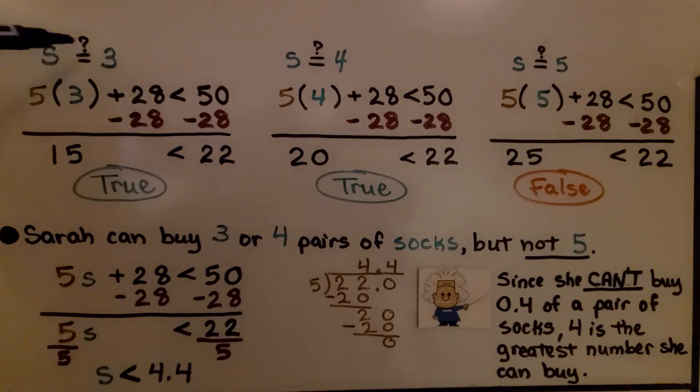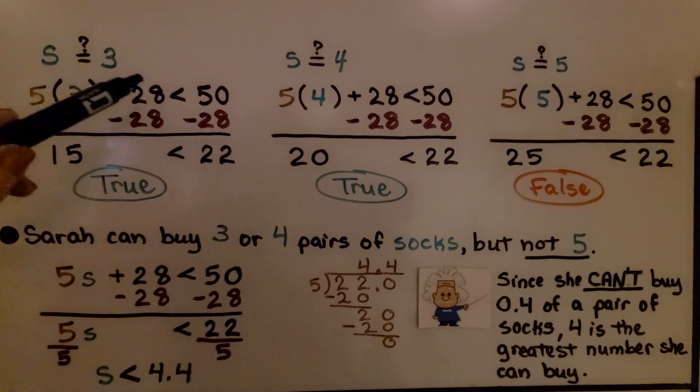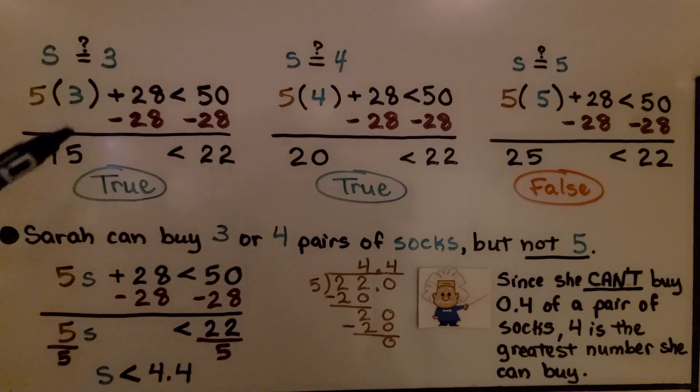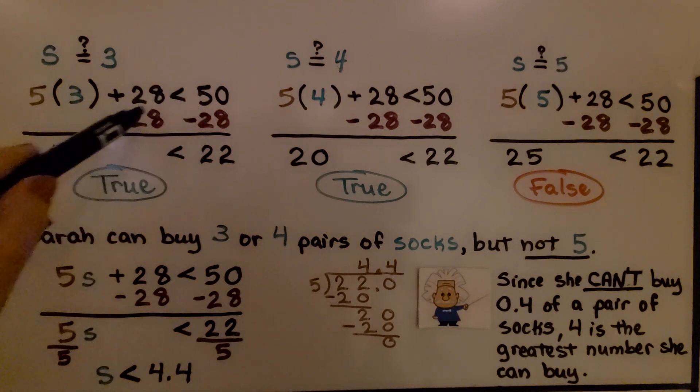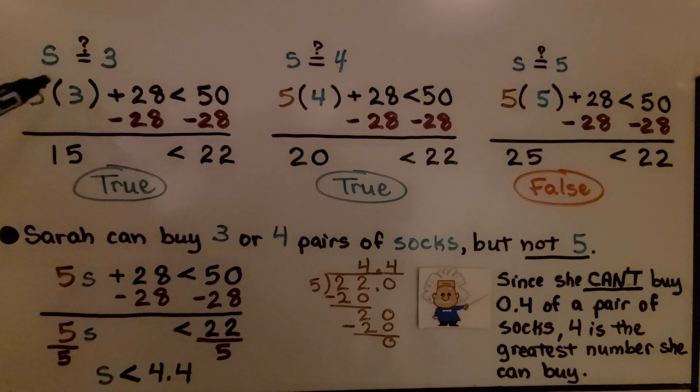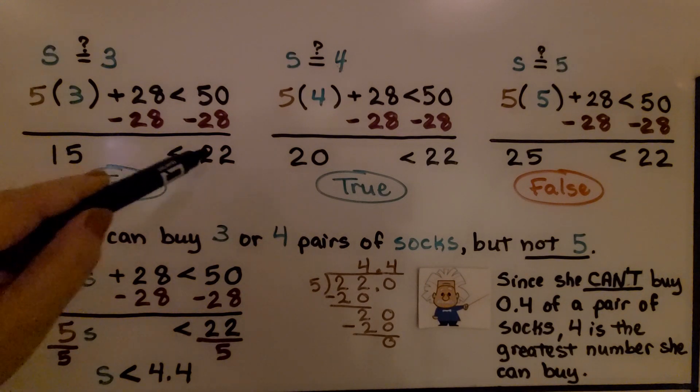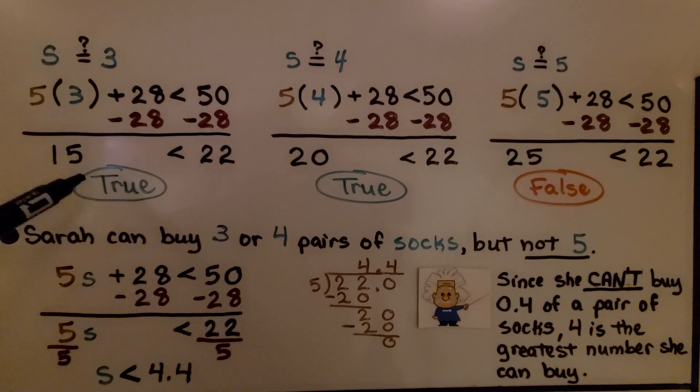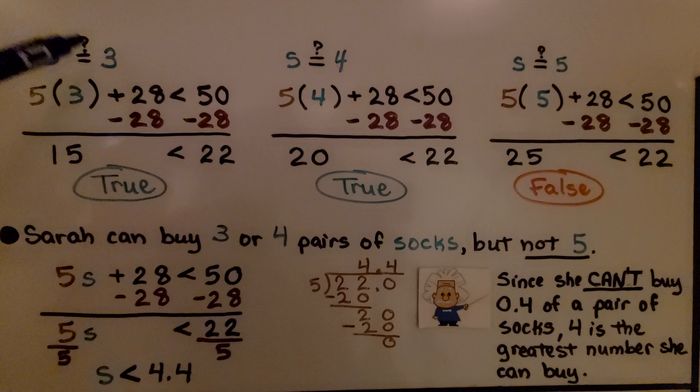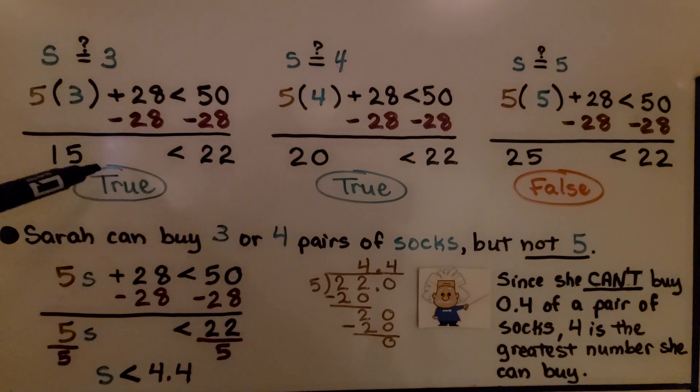We substitute 3 for S, we get 5 times 3 plus 28 is less than 50. We see this is a plus 28, so we do minus 28 from each side of the inequality sign, and we get 15 is less than 22. That's true. So 3 makes it true, it could be a solution.